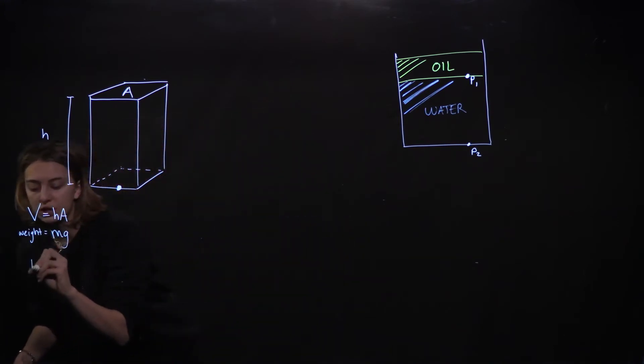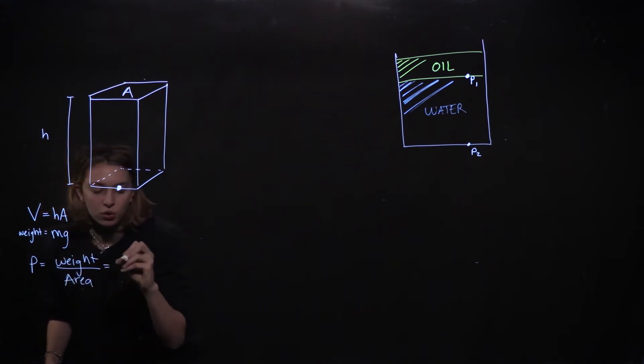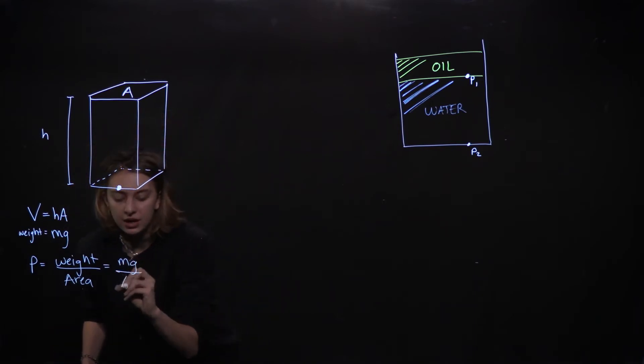We know that the pressure P is equal to the weight of that column over its area. We know that the weight is mass times G. The area is A.